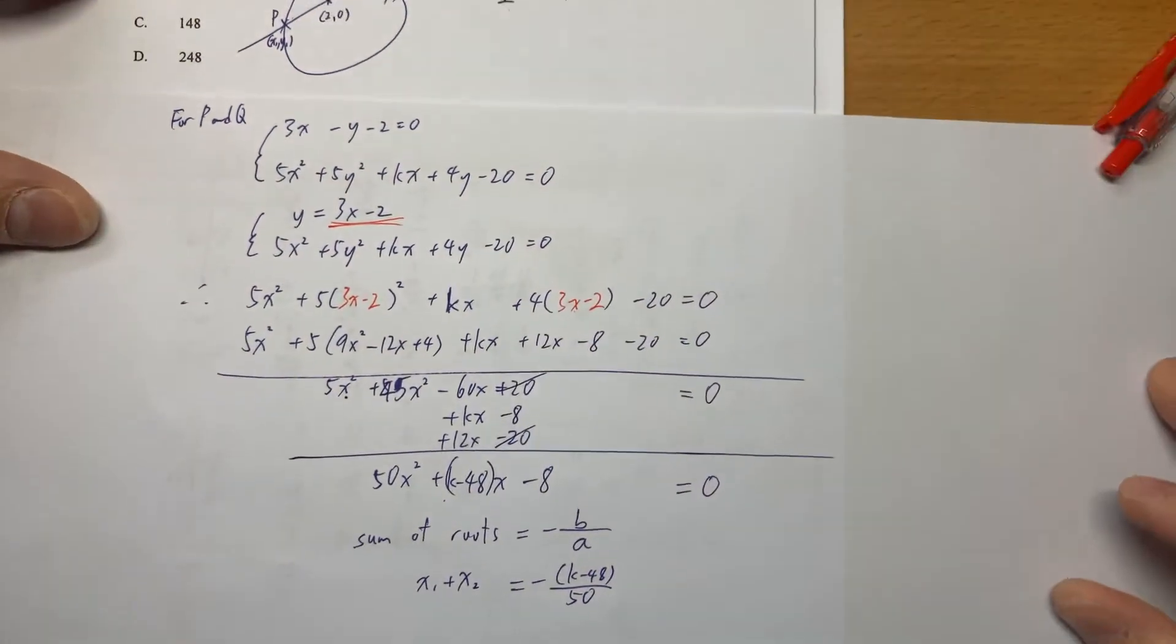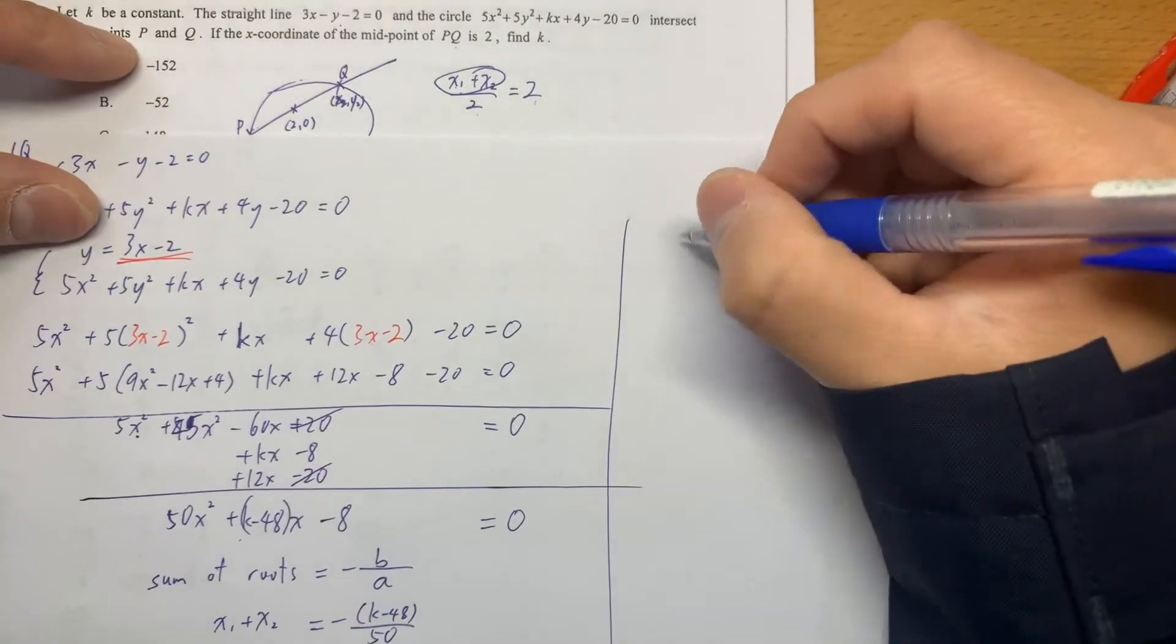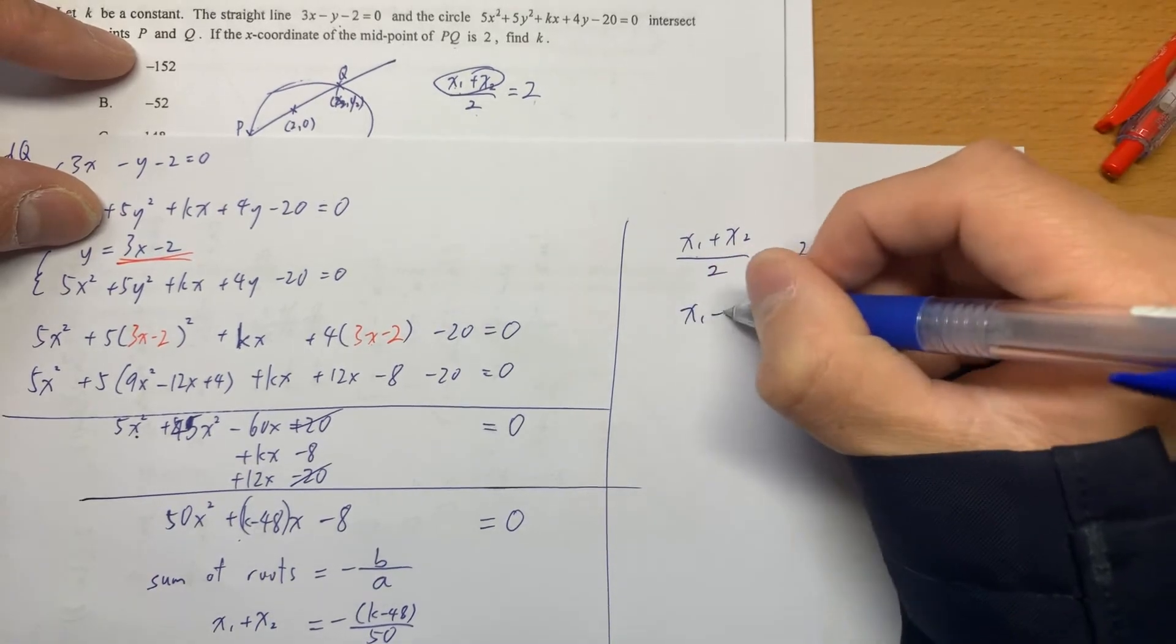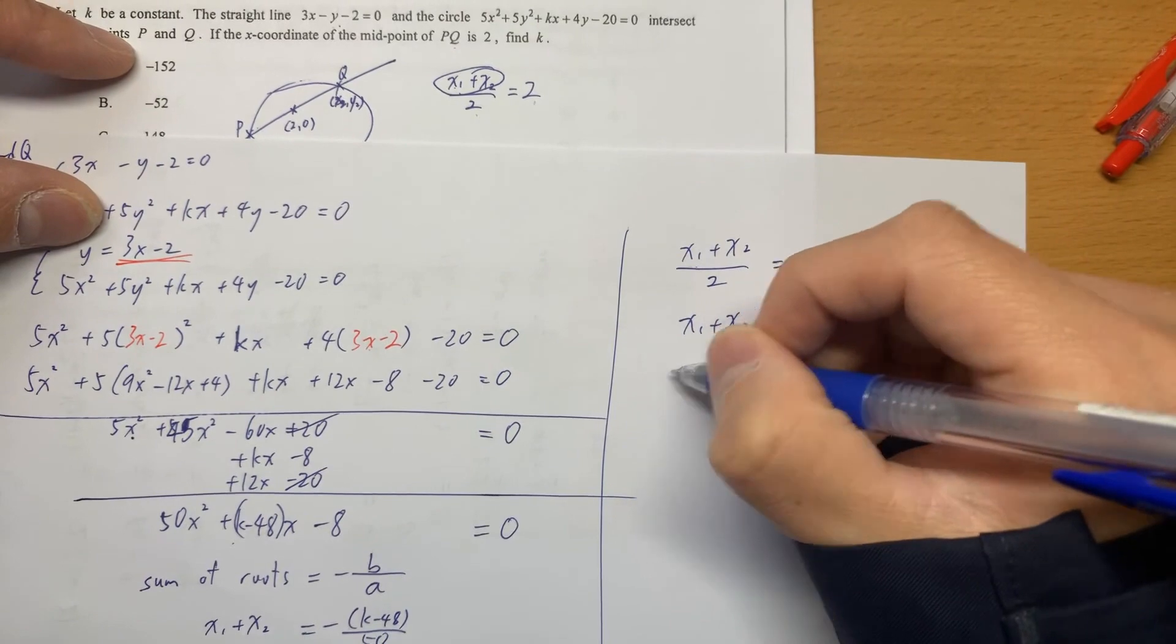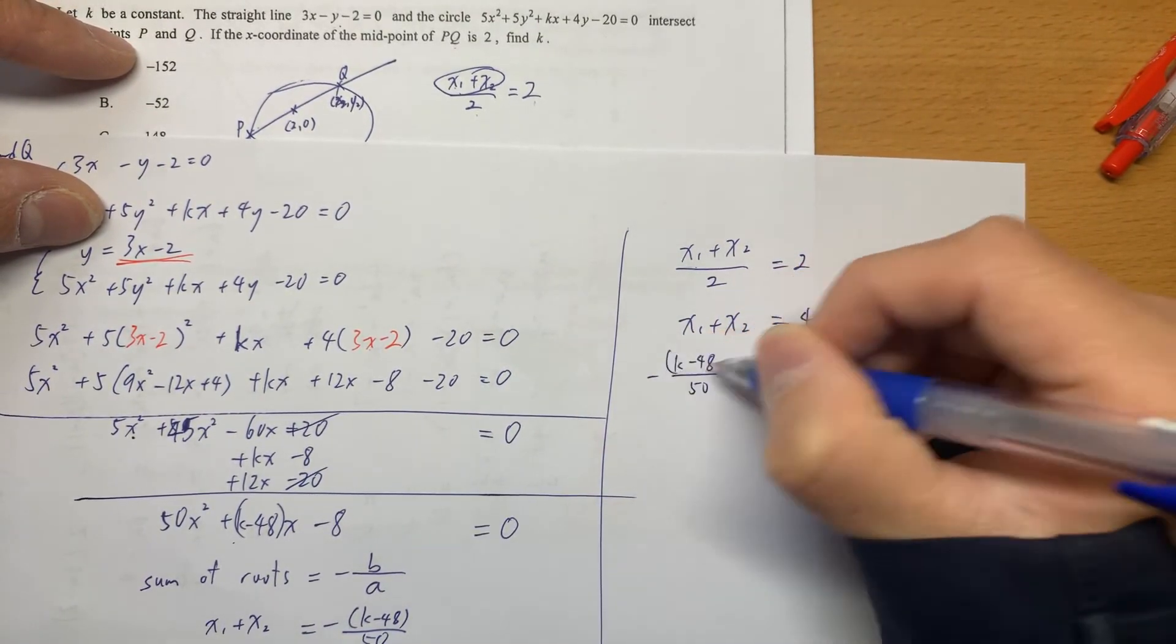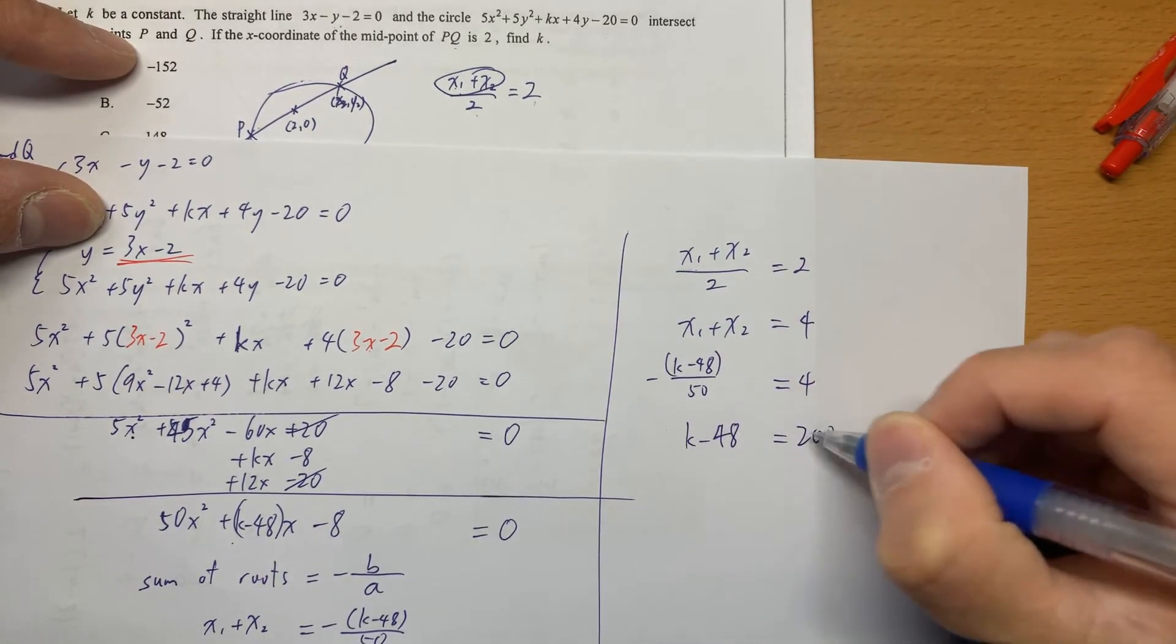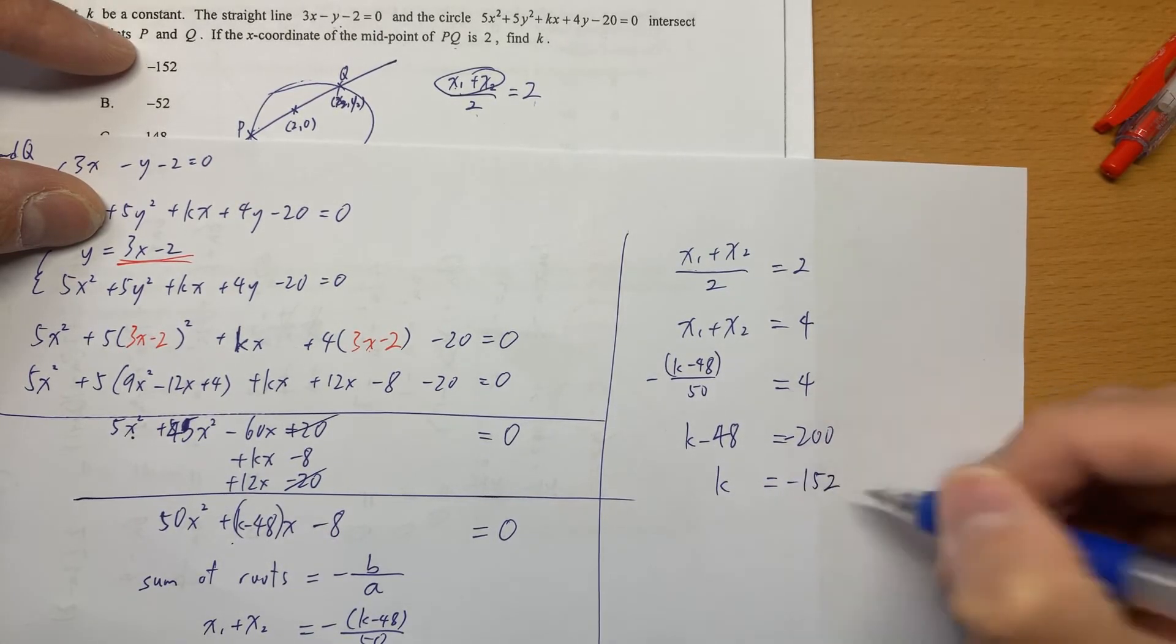That means x1 plus x2 is equal to this. And given, don't forget that in the very beginning, we know that x1 plus x2 over 2 is 0. That means x1 plus x2 is 0. Our result: k minus 48 is equal to negative 200. And then k is equal to negative 152.